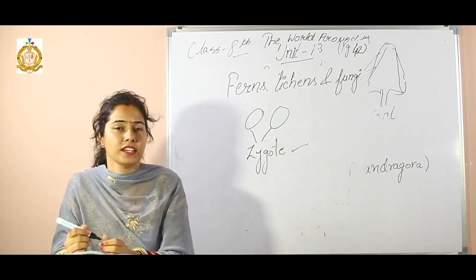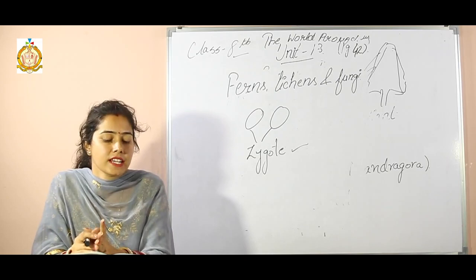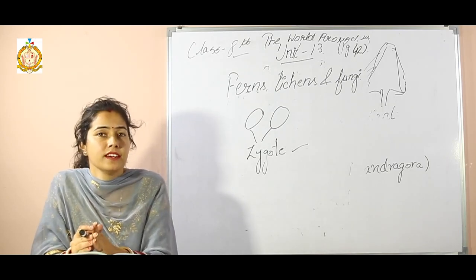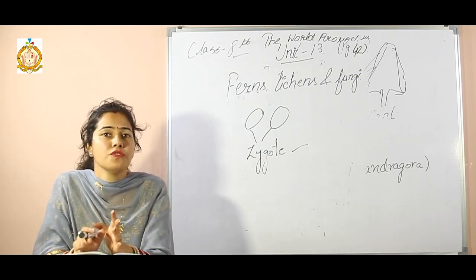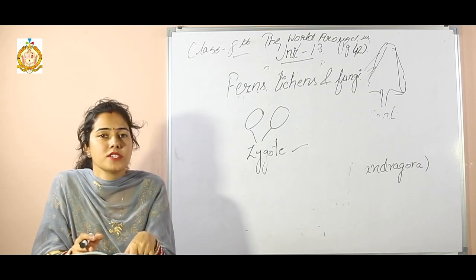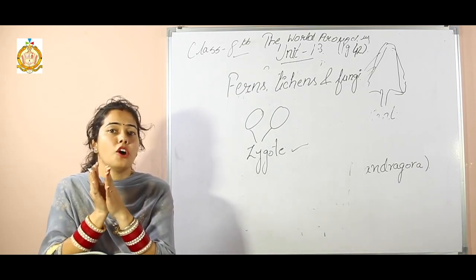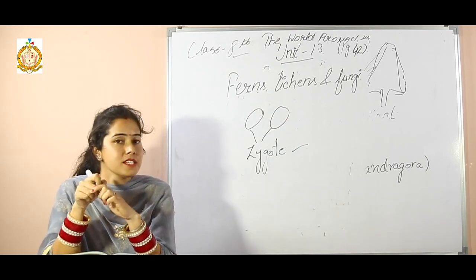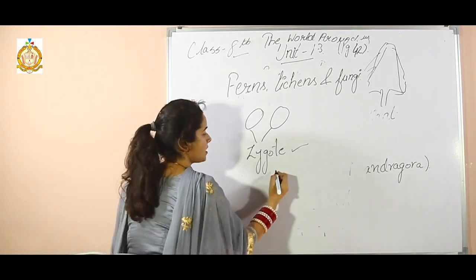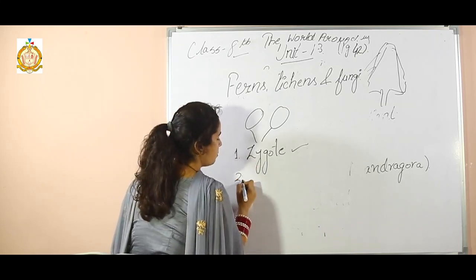The next one: which of these are thought to be the closest relatives of fungi? Animals, vascular plants, or mosses? Animals are the closest one, so the second one is animals.